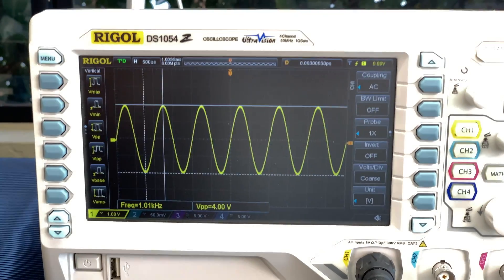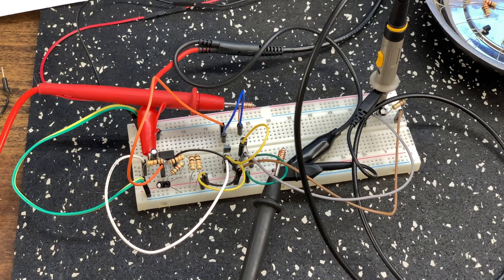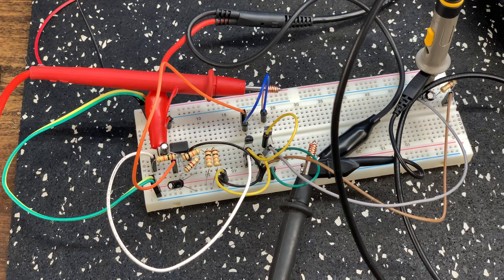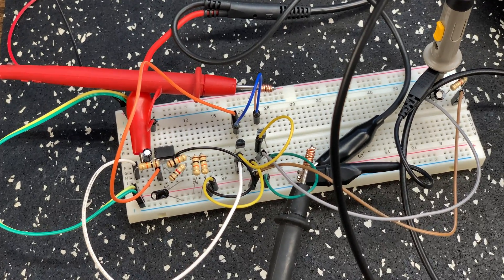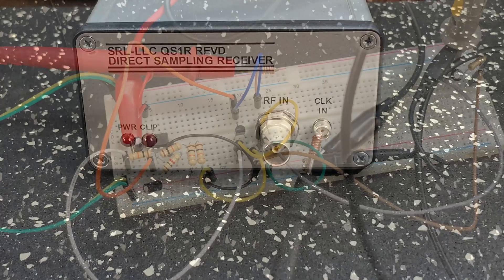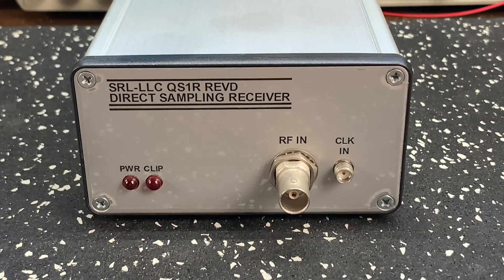For a one-off do-it-yourself project, it's perfectly fine to use an obsolete part or a part you have on hand or you can get on eBay. But if you have to make more than a couple, you'll have to choose your parts carefully to avoid supply issues.